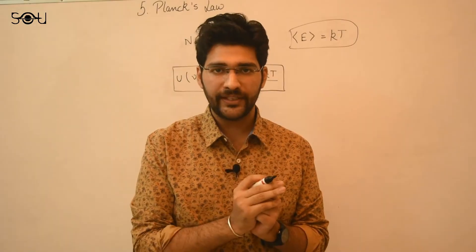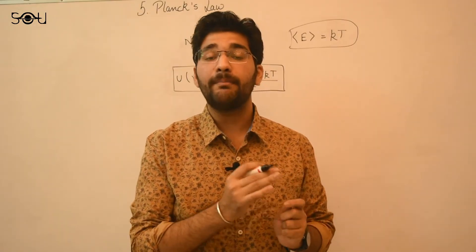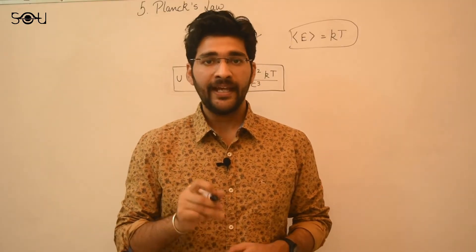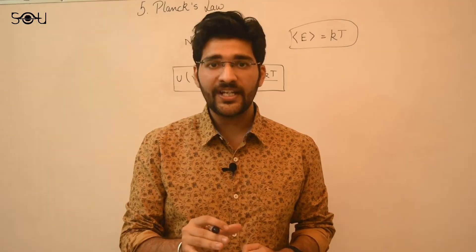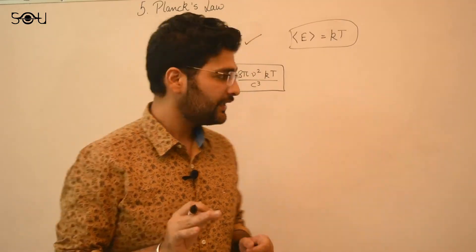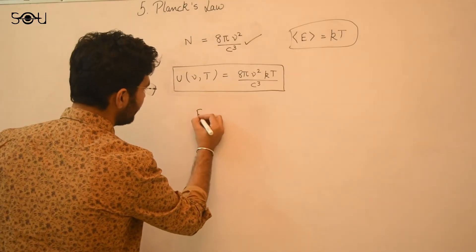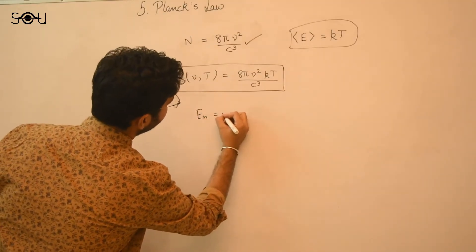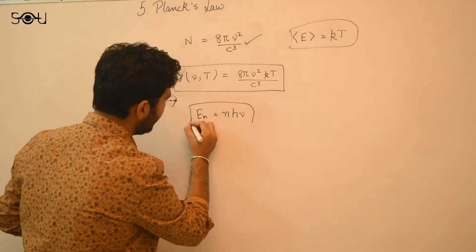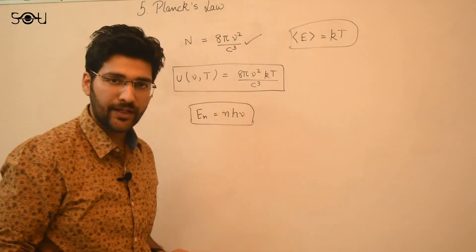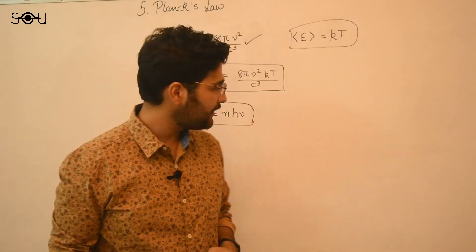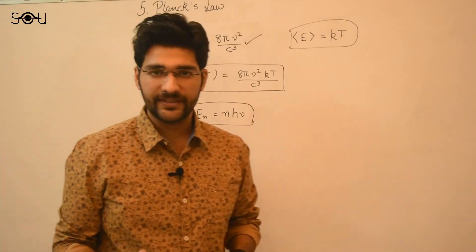According to Rayleigh and Jeans, any amount of energy can be interchanged between matter and radiation with no restriction. But Planck said no — energy can only be exchanged in discrete amounts. A standing wave cannot have any amount of energy; it can only have energy in multiples of Hν. That is, Eₙ = NHν, where N is a natural number 1, 2, 3, and so on, H is Planck's constant, and ν is the frequency.